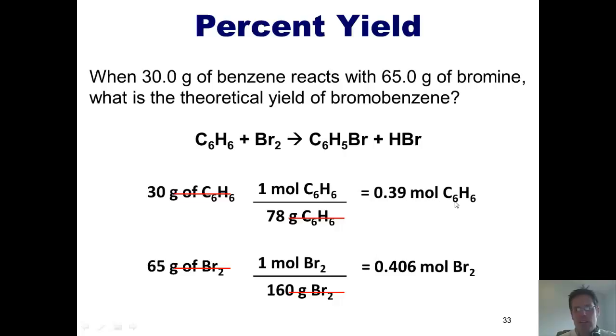I've got 0.39 moles of benzene and 0.406 moles of bromine. If I've got 0.39 moles of benzene, how many moles of bromine do I need? I need 0.39 moles of bromine. If I've got 0.406 moles of bromine, how many moles of benzene do I need? 0.406 moles of benzene. How many do I actually have? I've only got 0.39 moles of benzene. So who runs out first? The benzene does. Who's the limiting reactant? The benzene.